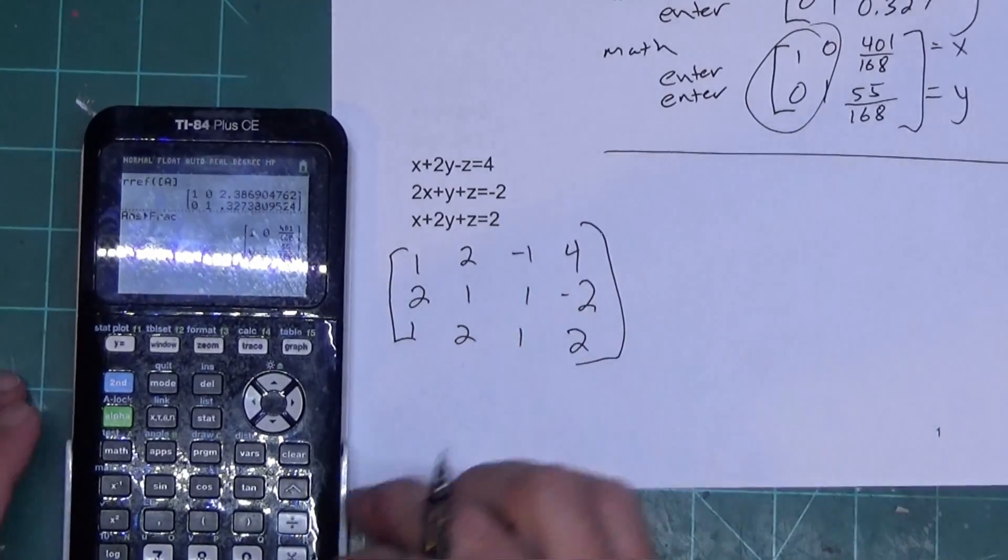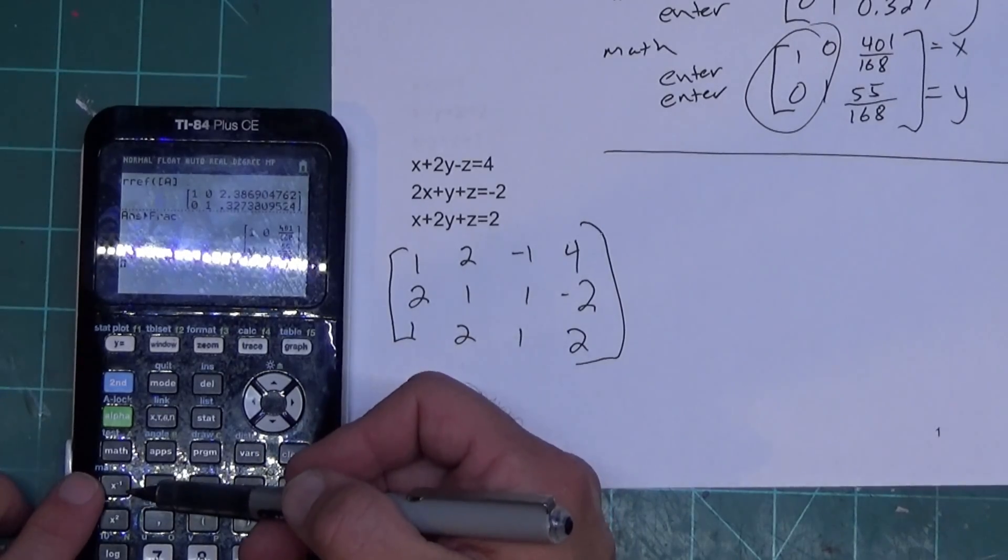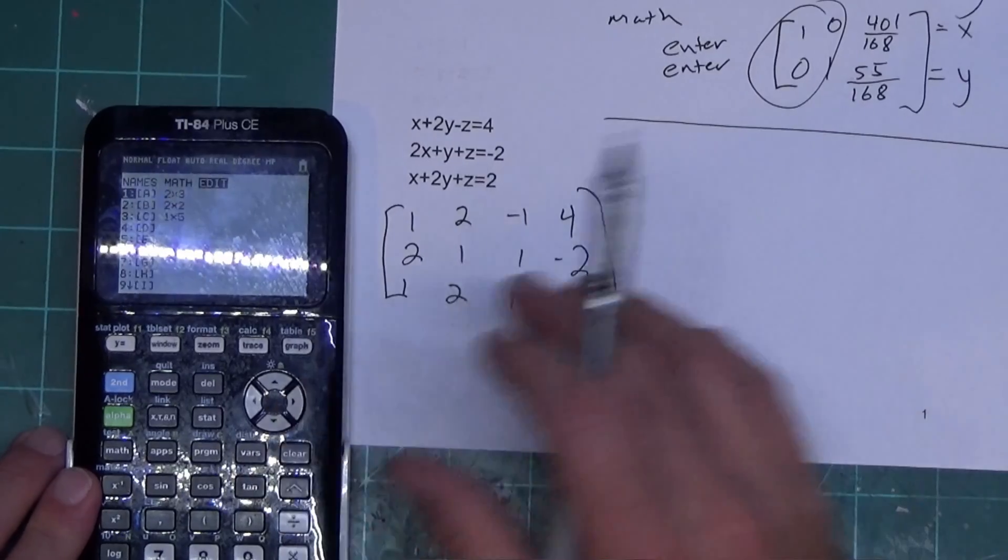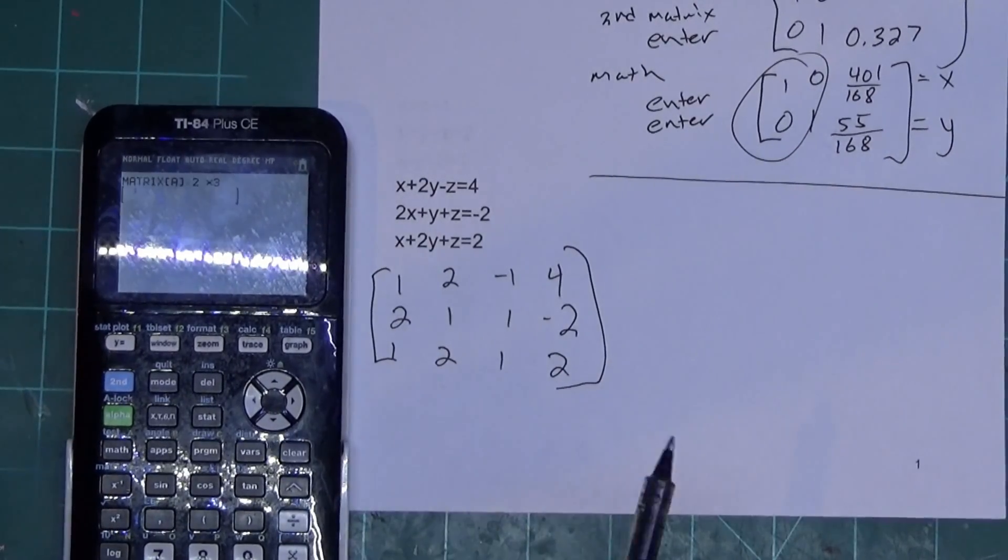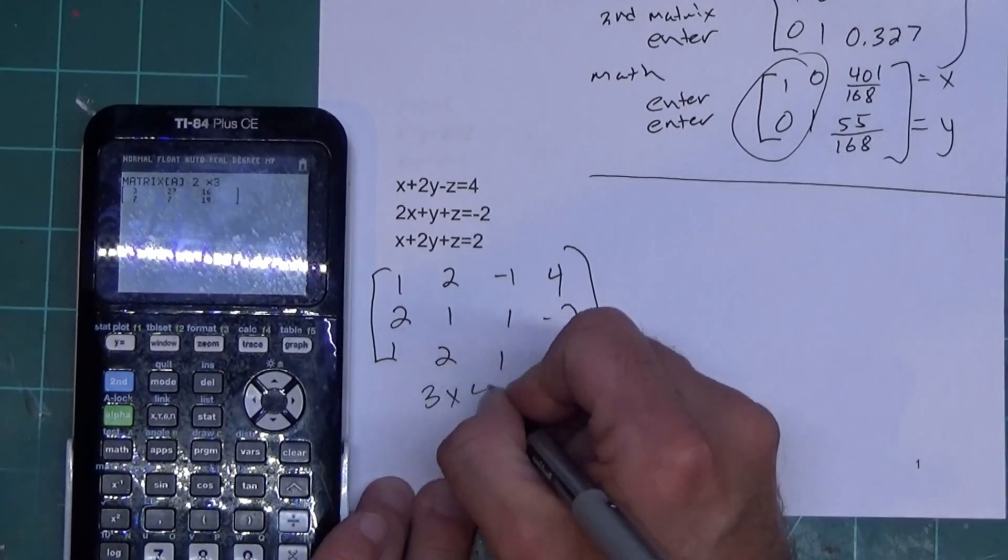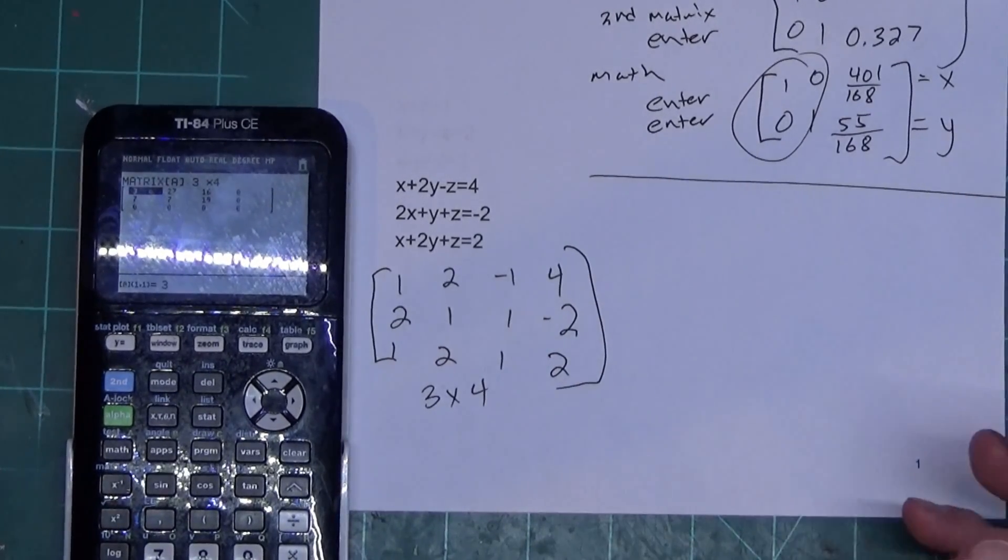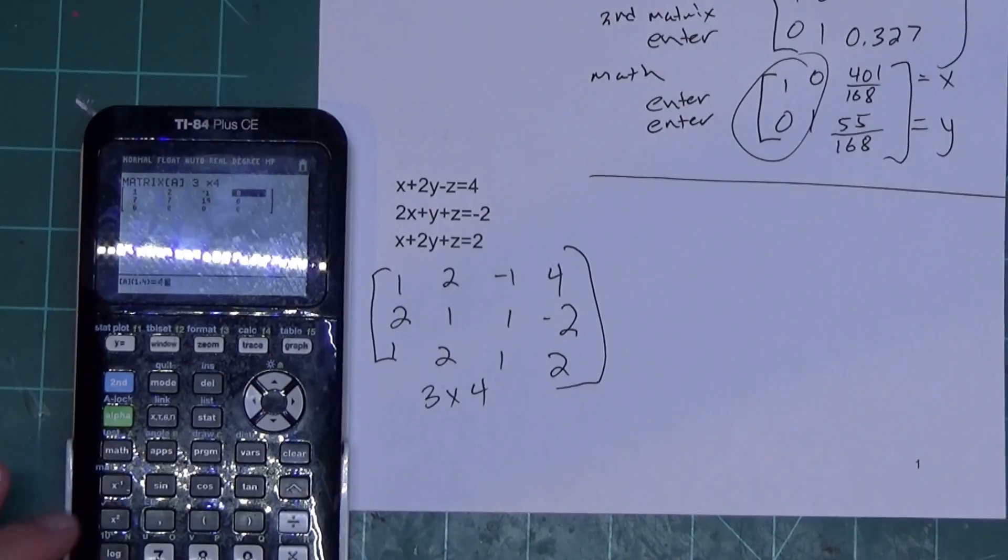So I'm going to hit second matrix on my calculator again. Matrix is right above the X the negative 1 button. We're going to go over to edit this time. We're going to press enter. This time this is a 3 by 4, so I'm going to tell the calculator 3 and 4. And then we're just typing it in. 1 enter, 2 enter, negative 1 enter, 4 enter, 2, 1, 1, negative 2.